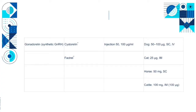GnRH dosage: synthetic GnRH is available as Cystorelin and Factrel, administered by injection at 50 to 100 micrograms per mL. As shown in the table, dosing varies by species: in dogs, 50 to 100 micrograms of gonadorelin via subcutaneous or intravenous routes; 25 micrograms via intramuscular in cats; 50 mg via subcutaneous injection in horses; and 100 mg via intramuscular in cattle.